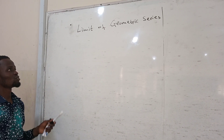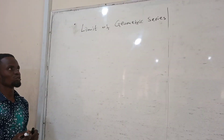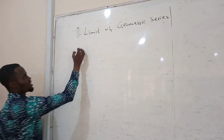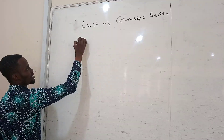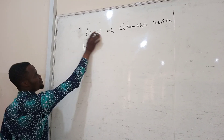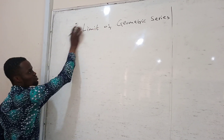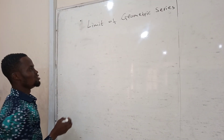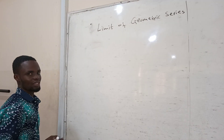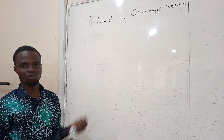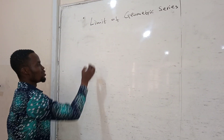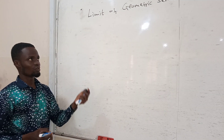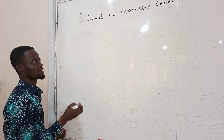We are here to sum up the limits of geometric series. Here you have a limit. Before that, let's talk more about the geometric series. The geometric series is about the finite amount and the infinite. Here you can talk about the sum of the series.